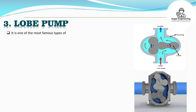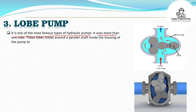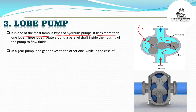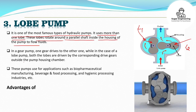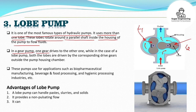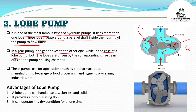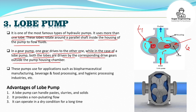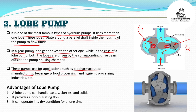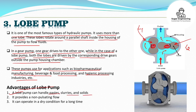Number 3: lobe pumps. It is one of the most well-known types of hydraulic pumps. It uses more than one lobe — this is lobe L1 and this is lobe L2. These lobes rotate around parallel shafts inside the housing of the pump to create fluid flow. Unlike a gear pump where one gear drives the other, in a lobe pump both lobes are driven by corresponding drive gears outside the pump housing chamber. These pumps are used in biopharmaceutical manufacturing, beverages, food processing, and hygienic process industries. Advantages: a lobe pump can handle paste, slurries, and solids; it provides a non-pulsating flow; and it can operate in dry conditions for a long time.